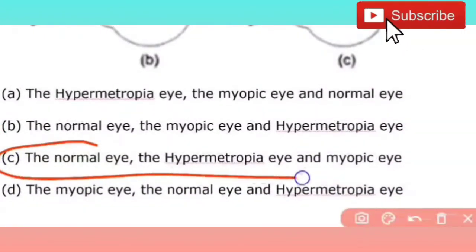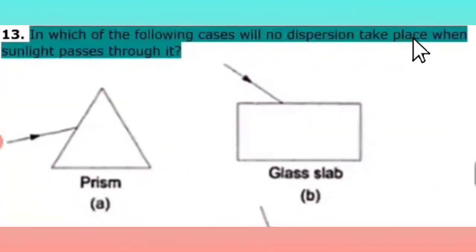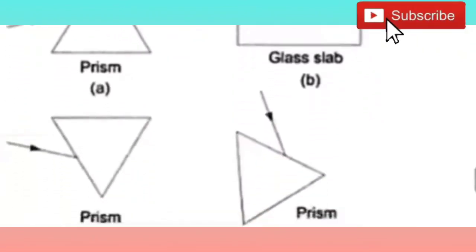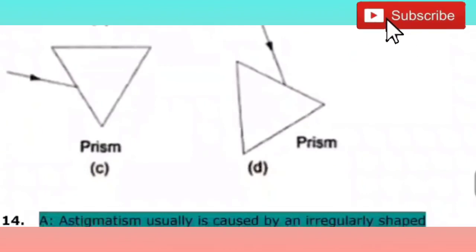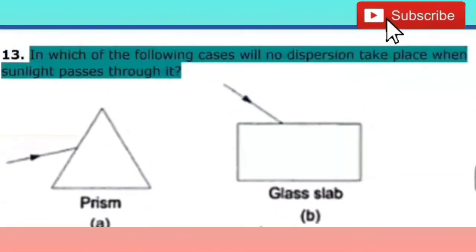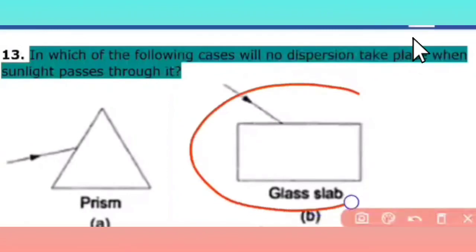The next question: in which of the following cases will no dispersion take place when sunlight passes through it? Options shown are a prism, a glass slab, an inverted prism, and a tilted prism. The right answer is glass slab — no dispersion takes place inside a glass slab.